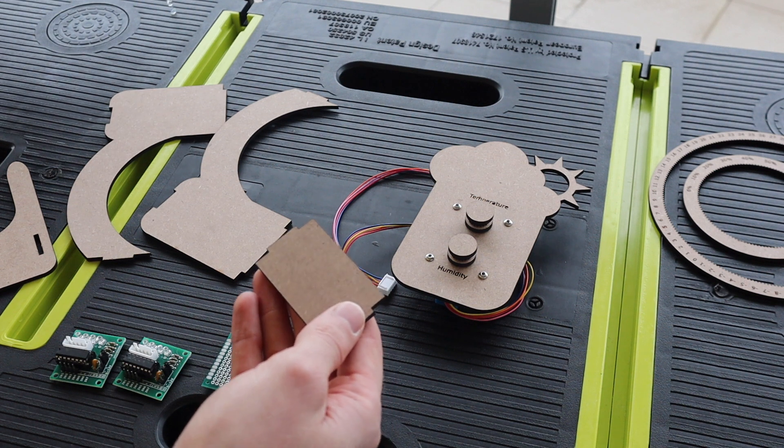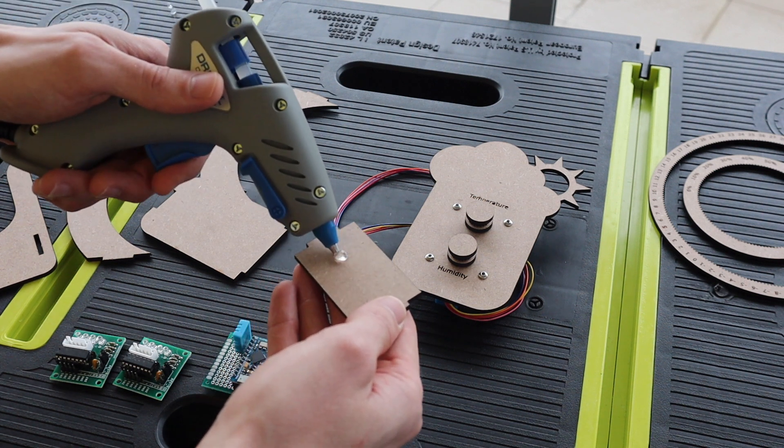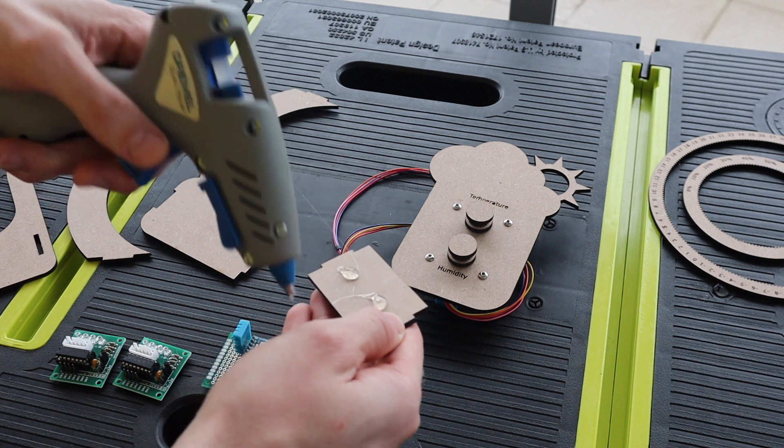I used a glue gun to glue the Arduino PCB to the back plate of the weather station and the two stepper motor drivers onto the two side stand pieces.